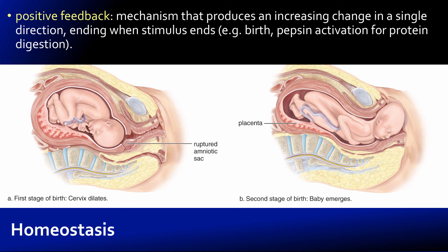As oxytocin increases, it causes stronger uterine contractions. The baby's head pushing into the cervix causes more oxytocin to be produced, which increases the intensity of contractions further. Eventually, uterine contractions combined with assistance from abdominal muscles may cause the baby to be born through the vaginal canal, at which point it's no longer stretching the cervix, meaning oxytocin production will not continue. While some uterine contractions may persist for a while, they should decrease in intensity. Those continued contractions actually help tighten back up the uterus. Additionally, oxytocin production continues through breastfeeding due to its role in milk letdown, so some effects persist after birth, though not with the same intensity as during the birthing process.